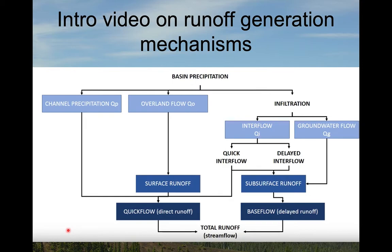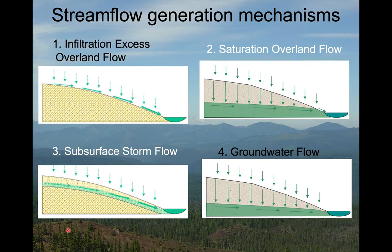Just below this video you will find another video that breaks down all of the different ways that water can get to streams — these runoff generation or stream flow generation mechanisms. I encourage you to watch that first. Below that is a link to a series of web pages that take you through these flow generation mechanisms and the watershed characteristics that control them — a good supplement to your text. There are really four important processes to move water from the watershed into the stream: infiltration excess overland flow, saturation overland flow, subsurface storm flow, and groundwater flow. I'm going to make a series of short videos taking you through each of those processes.